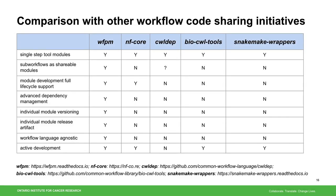Although to our knowledge there's no other workflow package management solution available, some workflow code sharing initiatives do exist, such as NFCore, CWL Dev, BioCWL tools, and Snakemake wrappers. Here we compare them with WFPM, taking into account eight different features: single-step tool module, sub-workflow support, development full lifecycle support, advanced dependency management, individual module versioning, individual module release artifact, being workflow language agnostic, and active development. As shown, WFPM provides the most feature completeness and is in active development.